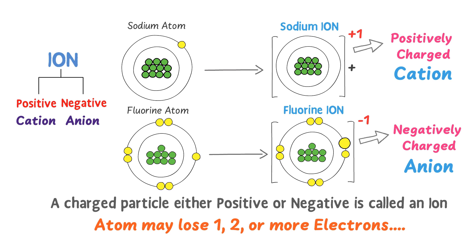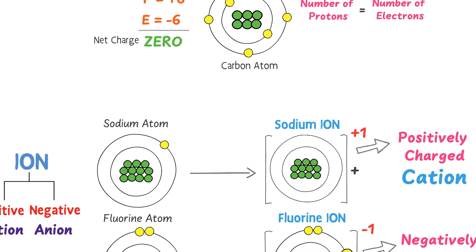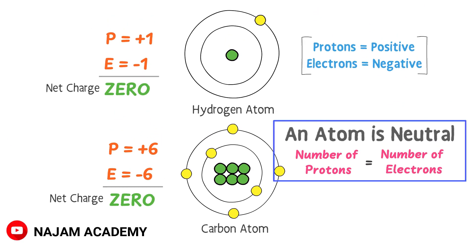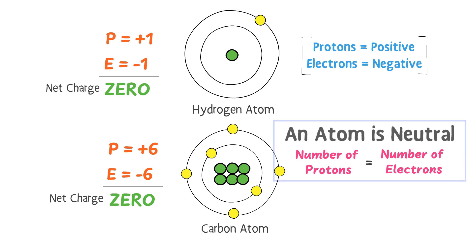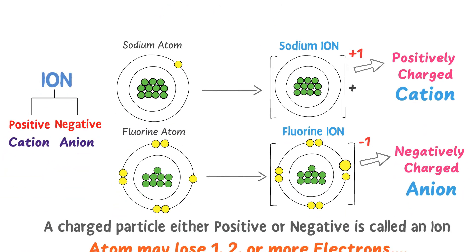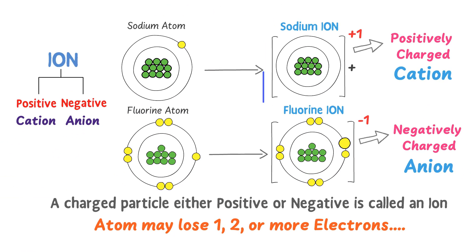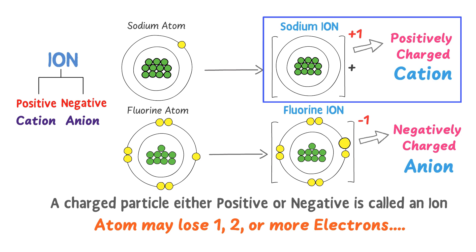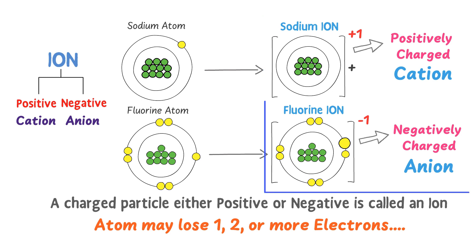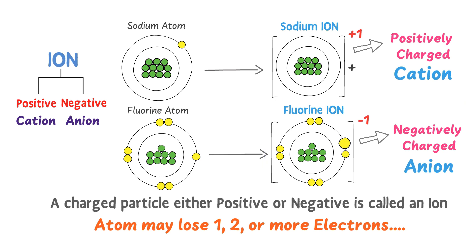Remember that an atom may lose or gain one, two, or more electrons depending on its valence and ionization energy. To summarize the lecture: an atom is a neutral particle because it has equal numbers of protons and electrons. When a neutral atom loses an electron, it becomes a positive ion known as a cation. When an atom gains an electron, it becomes a negative ion known as an anion. This was all about ions, cations, and anions.